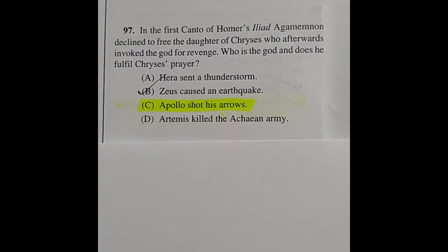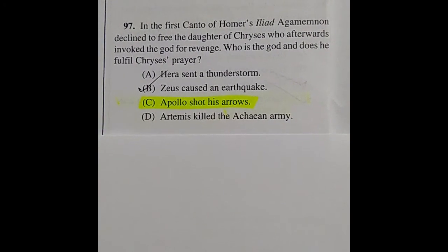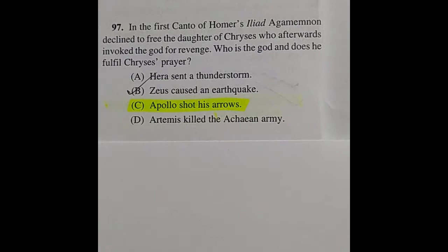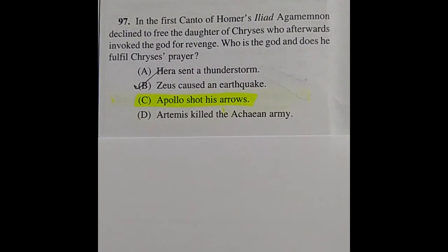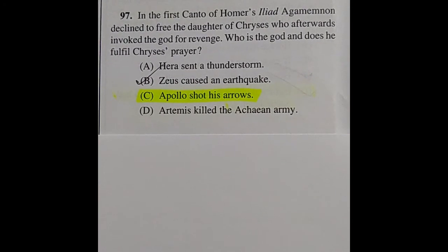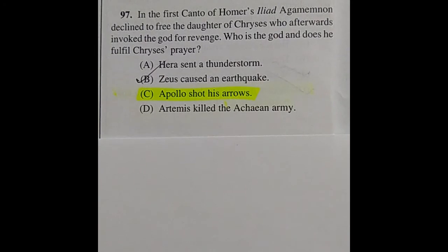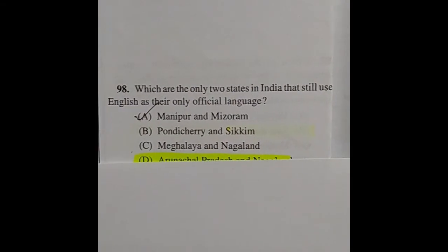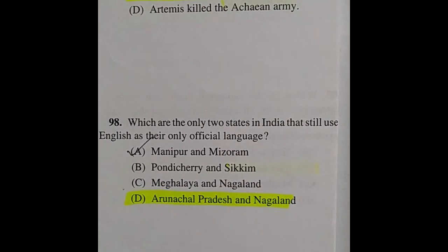Question 97: In the first canto of Homer's Iliad, Agamemnon declined to free the daughter of Chryses, who afterwards invoked the god for revenge. Who is the god, and does he fulfill Chryses' prayer? The right answer is option C: Apollo shot his arrows.